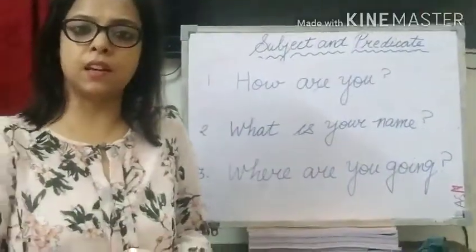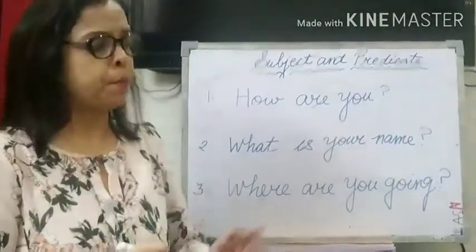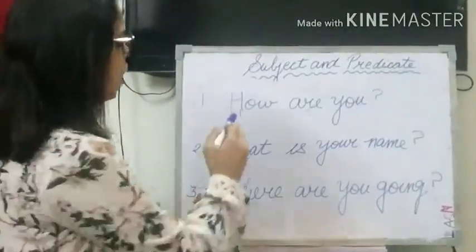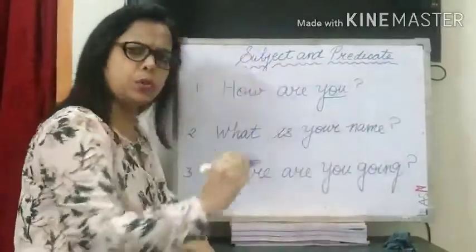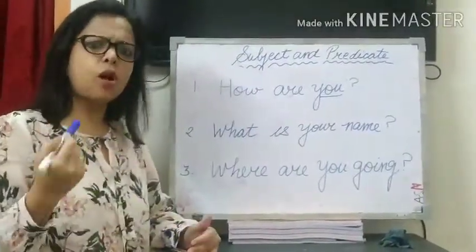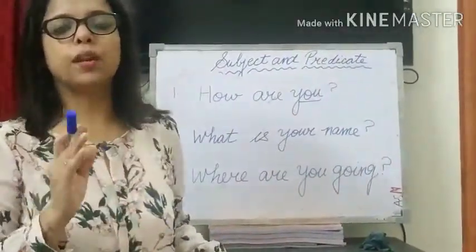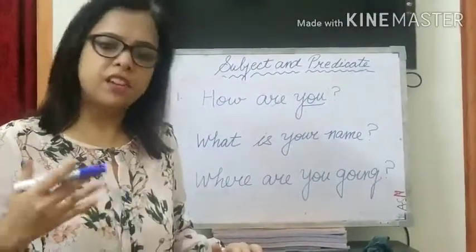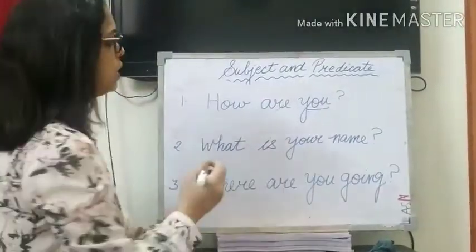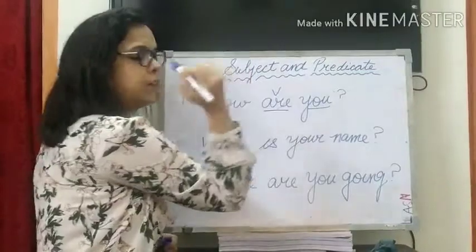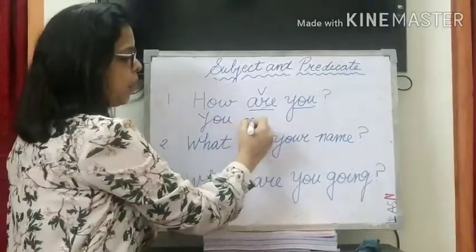In the previous examples the subject was coming before the predicate, so it was very easy to find. But let's see what happens here. There is a little trick — you can rephrase the sentences, meaning you simply rearrange the position of the words. In 'How are you?', 'are' is the verb. So let's rephrase the sentence as: 'You are how.'